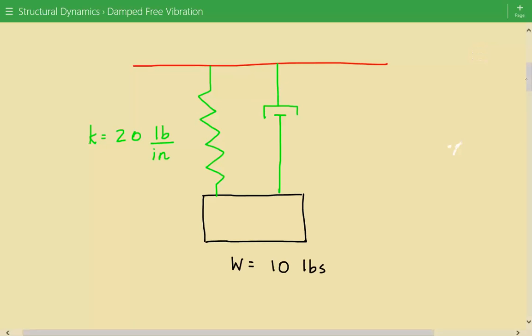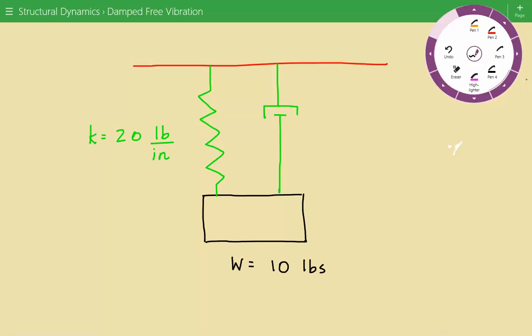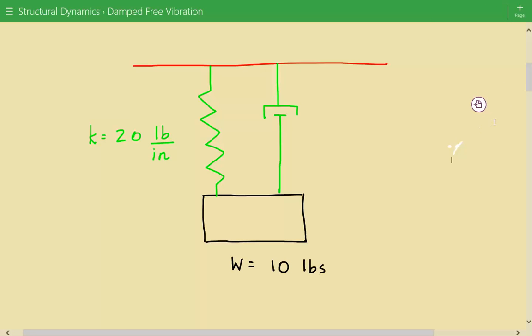This mass is released. It's removed from the equilibrium position. It's given an initial displacement of 2 inches, and then it's held there and suddenly released with 0 initial velocity. So we need to find the damping coefficient and the displacement of this mass after 0.1 and 0.3 seconds.